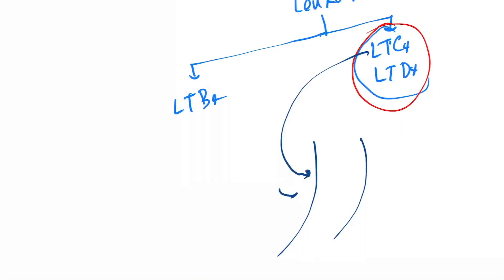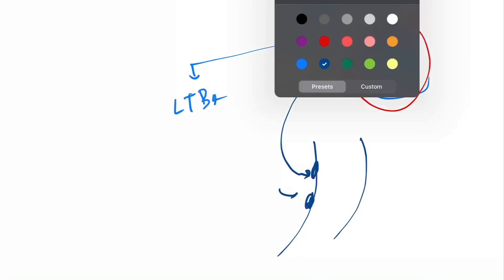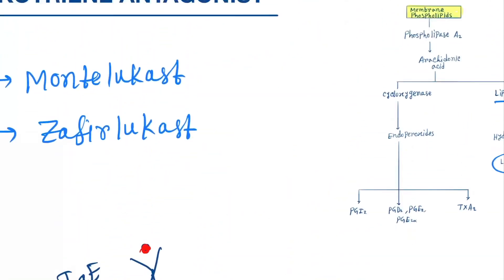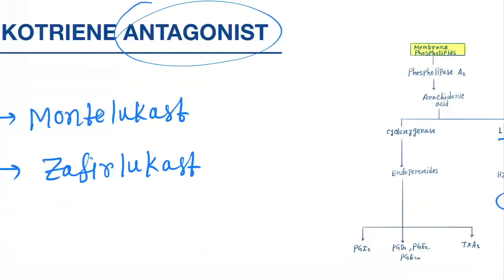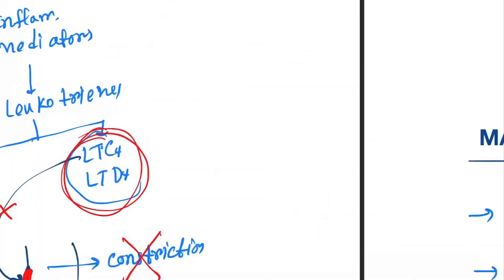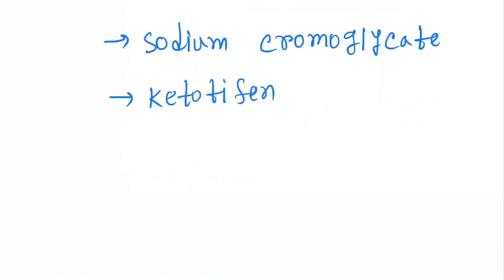LTC4 and LTD4 act on the bronchial smooth muscle — they come and bind to the leukotriene receptors and cause constriction. Leukotriene antagonist drugs come and bind to these receptors so these two mediators are no longer able to bind, and bronchoconstriction will not happen.